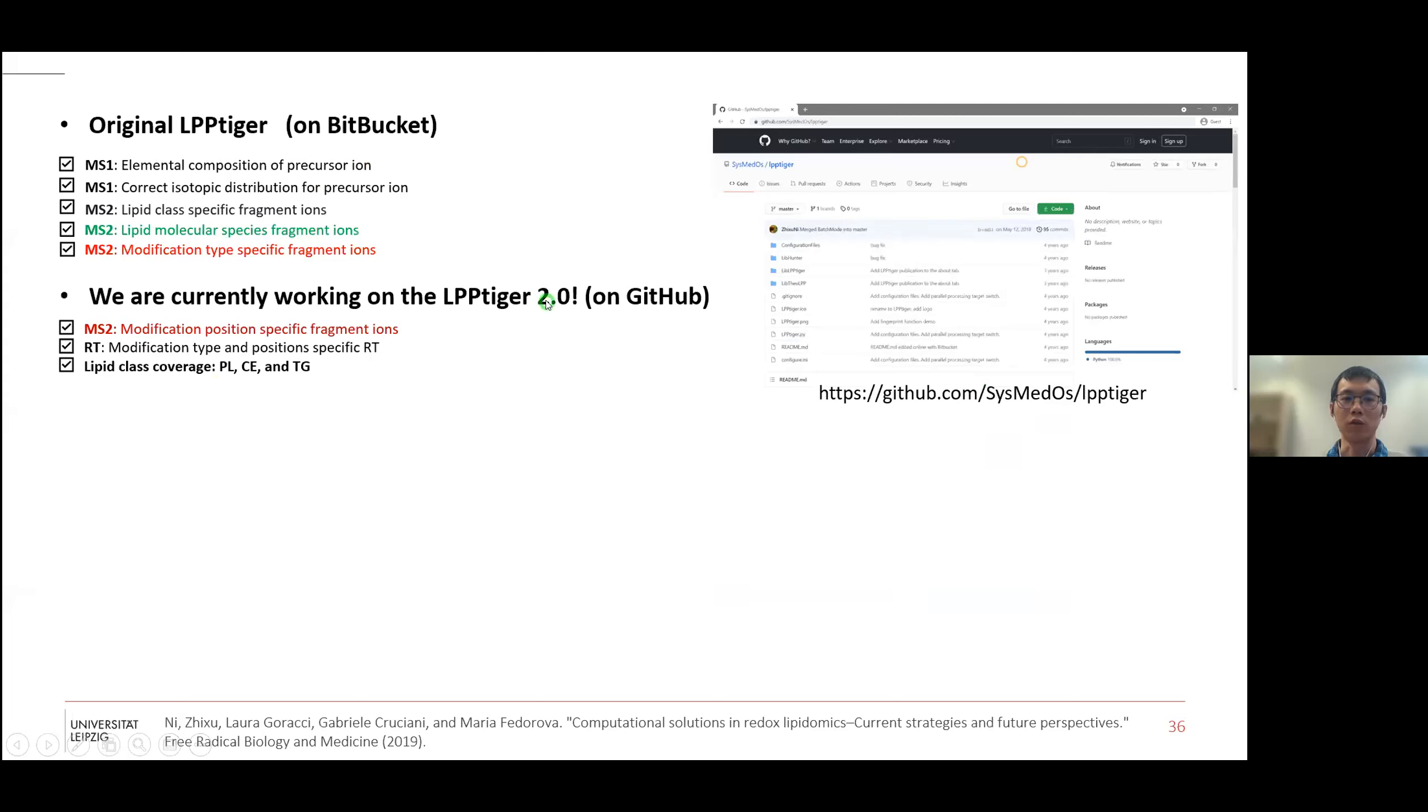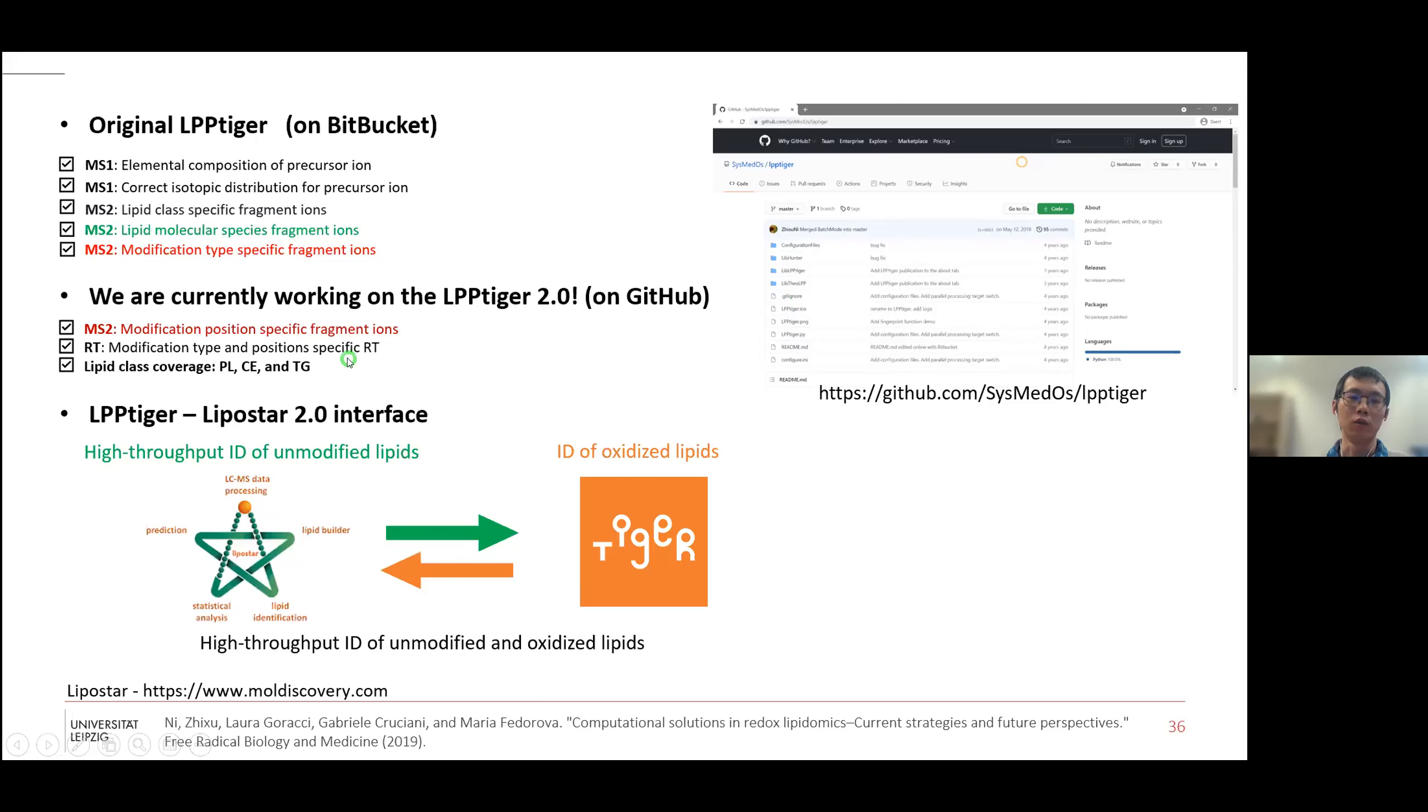We are working on the LPP Tiger version 2 on GitHub. This is the new website for version 2, which is different from version 1. We are closely collaborating with Lipostar team to try to make an interface between LPP Tiger and Lipostar 2. The idea is we use Lipostar for high-throughput identification of unmodified lipids. This result will be transferred to LPP Tiger to identify oxidized lipids to oxidation type level or higher. Then we can transfer it back to Lipostar for additional analysis.